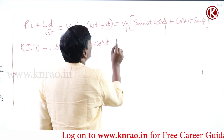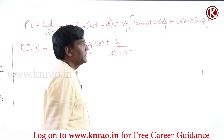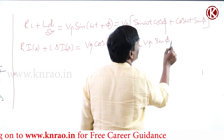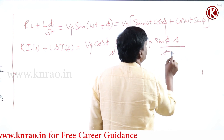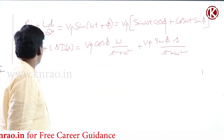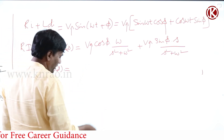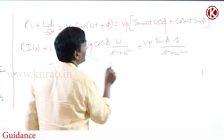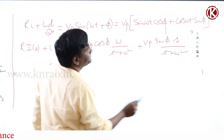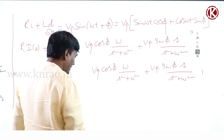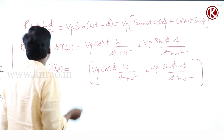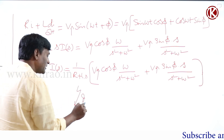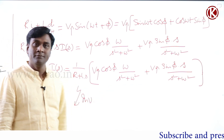This expands to V_max·cos(π)·[ω/(s² + ω²)] + V_max·sine(π)·[s/(s² + ω²)]. Then I(s) equals this entire expression multiplied by 1/(R + Ls). Now you have to do the inverse Laplace transform of such a large equation — that's how difficult it becomes.